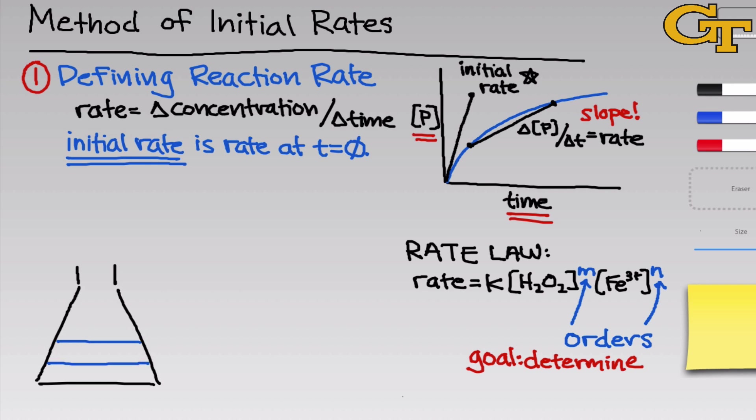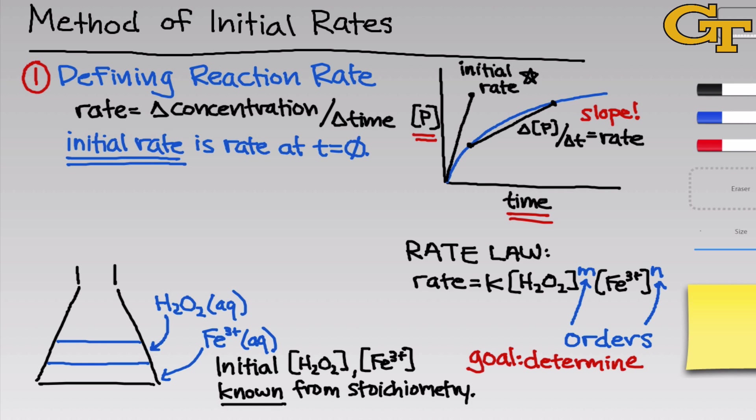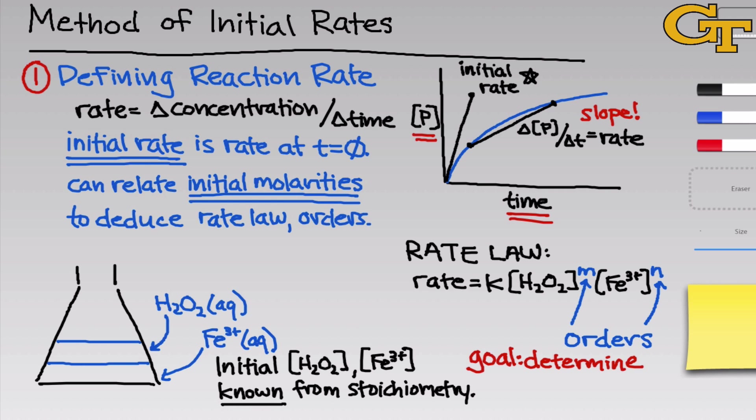So what we're going to do is add solutions of hydrogen peroxide in water, aqueous hydrogen peroxide, and aqueous iron 3+, and the reaction will happen from there. At t equals zero, at the moment the reaction begins, we actually know these concentrations purely from stoichiometry. You'll have a reagent bottle of hydrogen peroxide with a concentration written on it. You'll have an iron 3+ bottle with its concentration written on it. Using those stock concentrations and the total reaction volume, we can easily calculate the initial concentrations of H2O2 and Fe3+. From there, we can then relate these initial molarities to the initial rate to deduce the rate law and the orders.